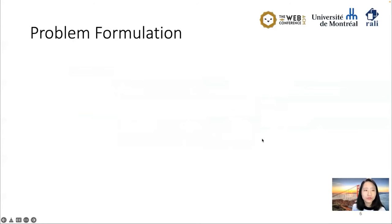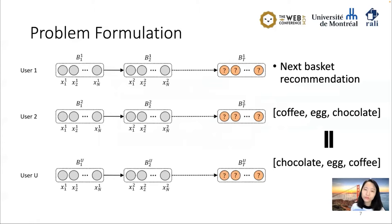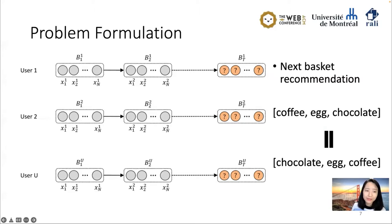Now let's move to the problem formulation. Following previous work, we format our task as next-basket recommendation, where each basket refers to one day. We have a bunch of users, each with a bunch of baskets. We take the previous baskets and predict the last basket — meaning the whole day's food. The relative position of items inside the basket is not important, so coffee, egg, chocolate is the same as chocolate, egg, coffee for our task.